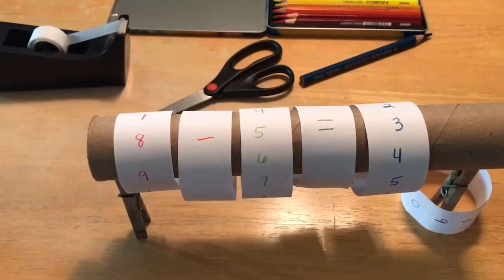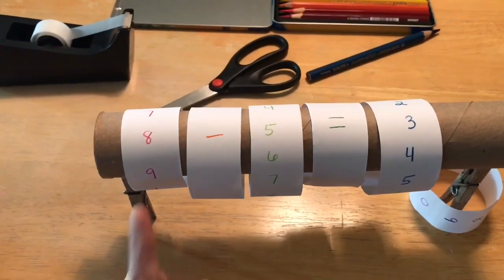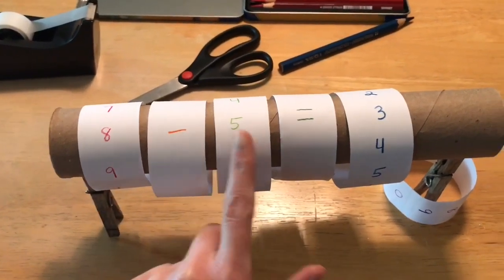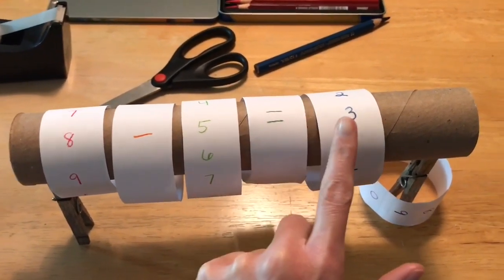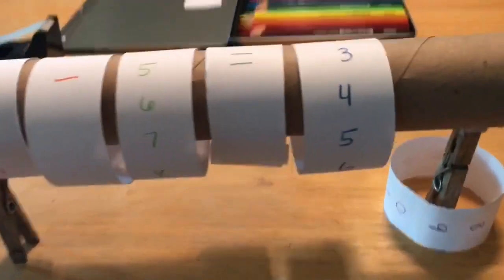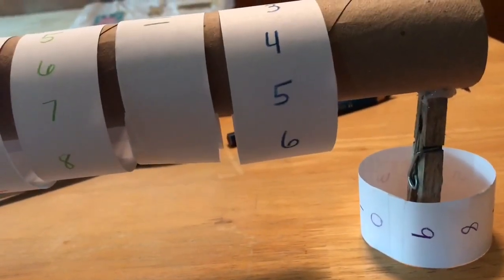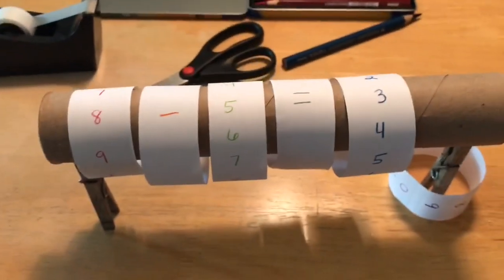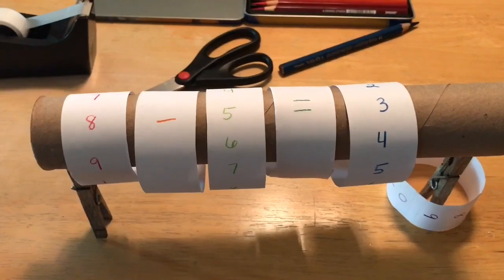So the math machine is now ready to use. You turn the rings to make a problem. So I made the problem eight subtract five is equal to, and the answer to this one is three. I didn't need the purple ring, so I just kind of pulled it down to the side, but you can certainly just pull it back up over the end of the paper towel tube if you need it.